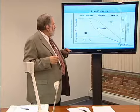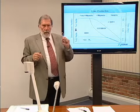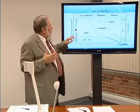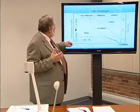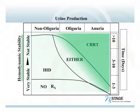The first thing we want to do is take a look at what the patient is and what environment the patient is in. Hemodynamic stability is very important. The less stable somebody is, the more likely they're going to need continuous therapy, since continuous therapy is much more forgiving hemodynamically than intermittent.